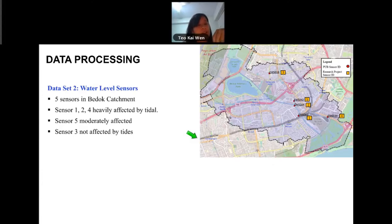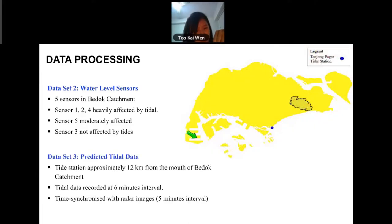In terms of other data sets that we are working with, water level sensors, you can see that there are five sensors in the catchment. Catchment one, two, and four are heavily affected by tidal. Sensors five and three are not really affected by tides. And also we use predicted tidal data as well, and we need to tighten code it to synchronize it to five minutes interval.